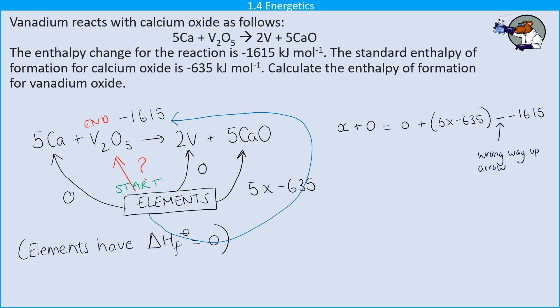So that's why it's minus minus 1615, because we're going the wrong way up that arrow. We're going right to left instead of left to right. So because we're going the wrong way up the arrow, we need to change the sign or do minus that minus number.